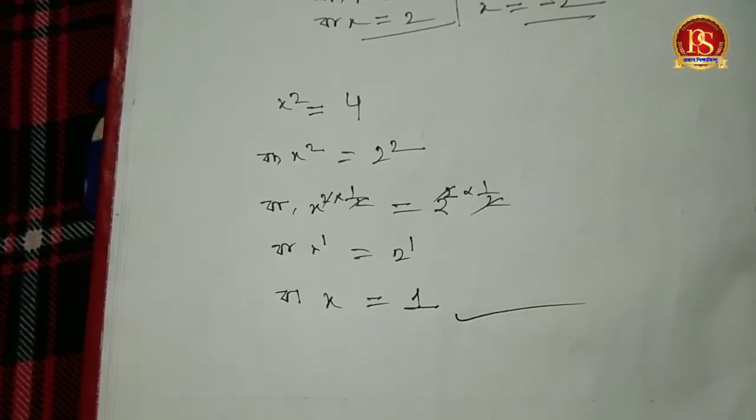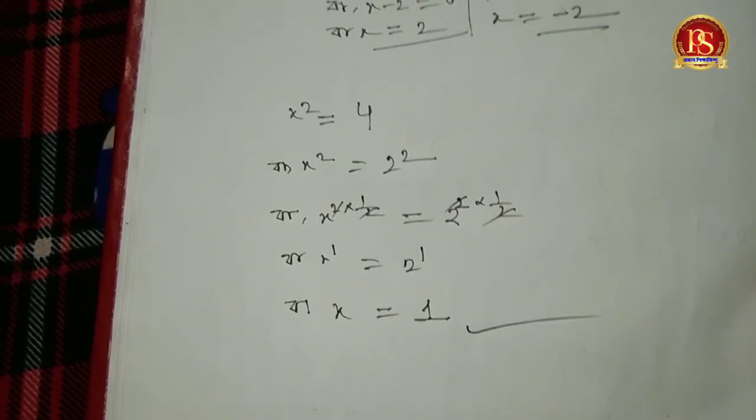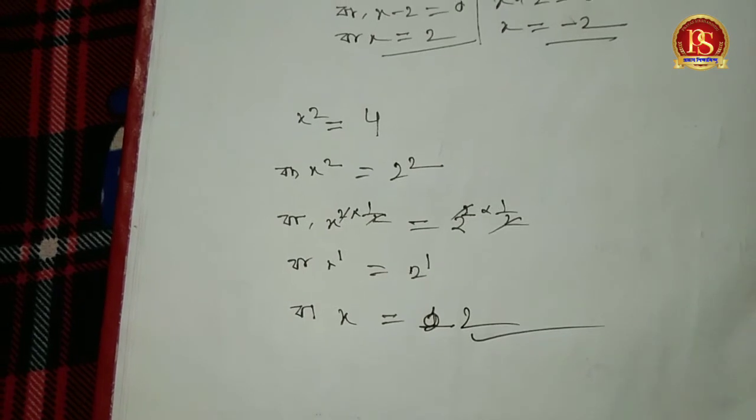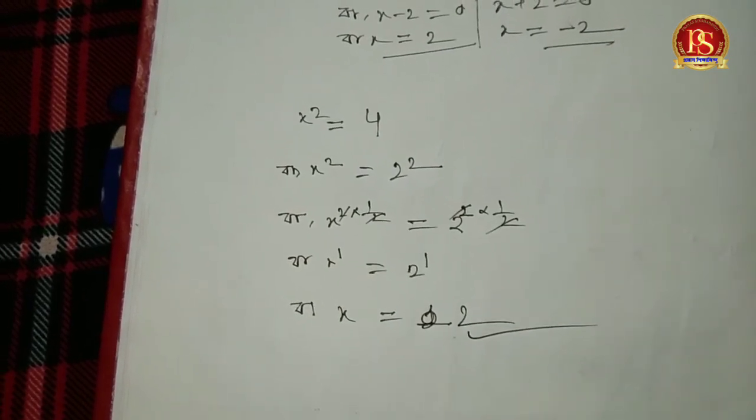So that's the logic behind why x = ±2 when x² = 4. This is the reason we get both positive and negative values.